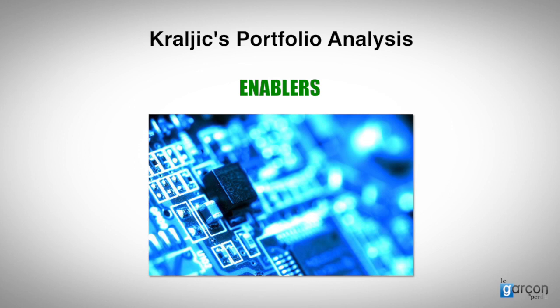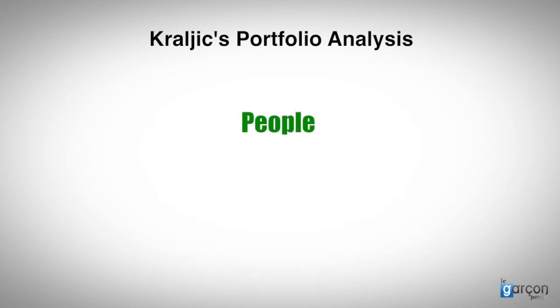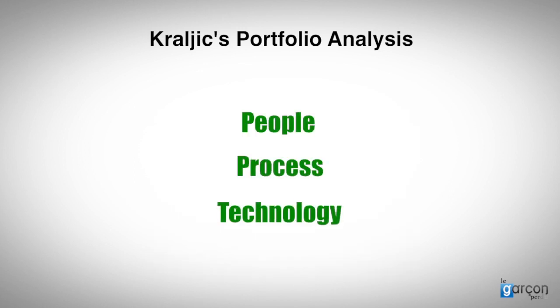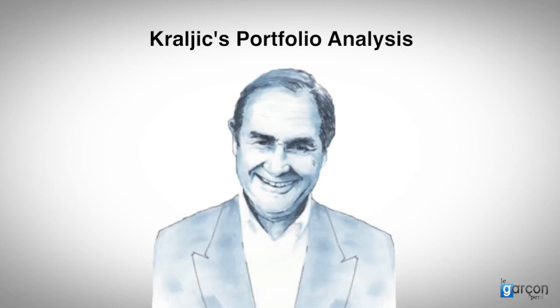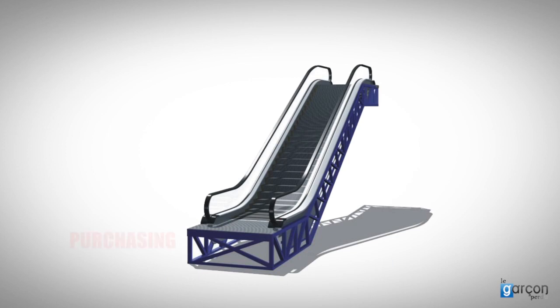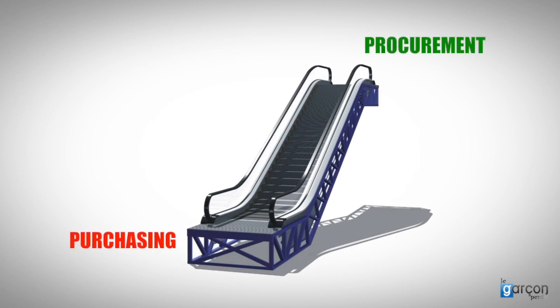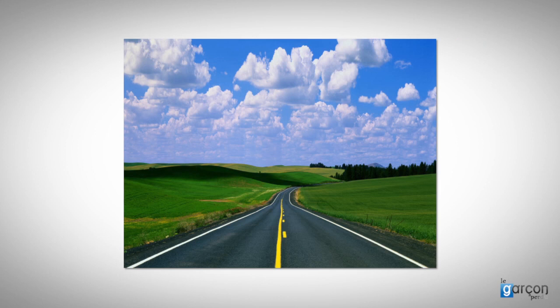I think many of you listening to this would echo that. Using the phrases people, process and technology, I've reinterpreted Kralich's language to make them a little more contemporary. But that his ideas are just as relevant today as they were 30 years ago shows what a visionary the man is. So there you are: eight strategies that help elevate purchasing to procurement and a roadmap for change. Good luck on your journey.